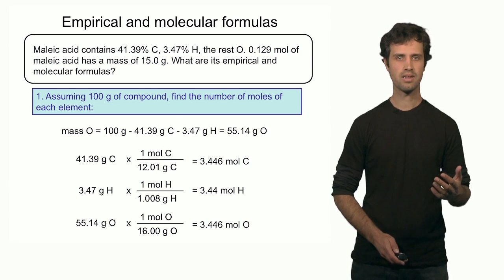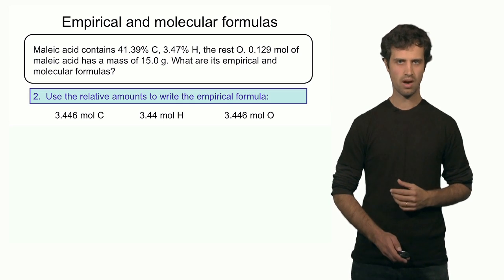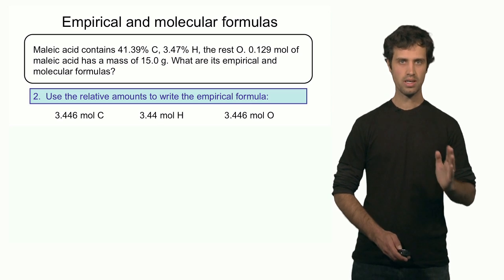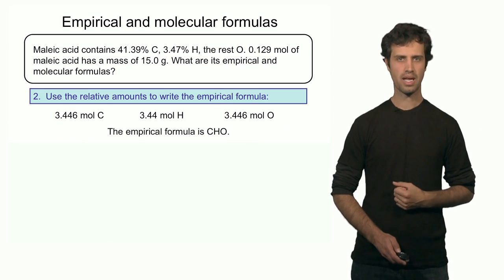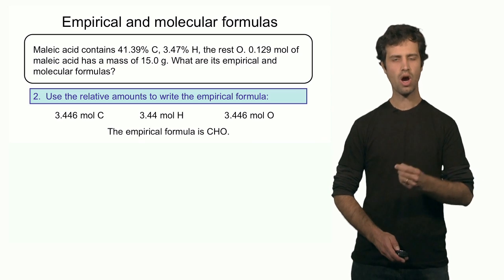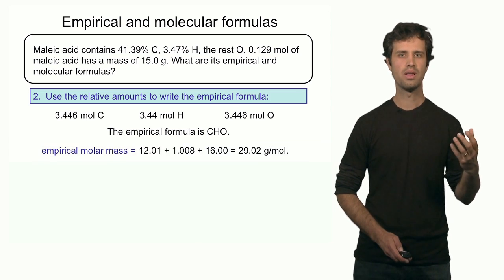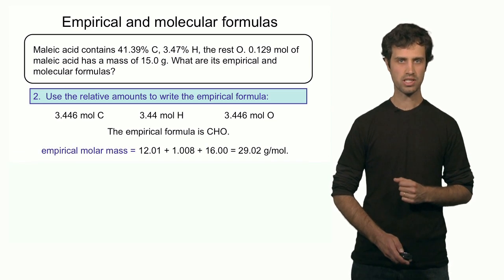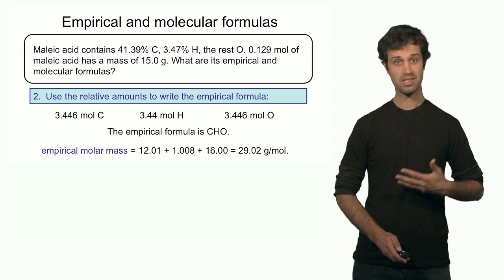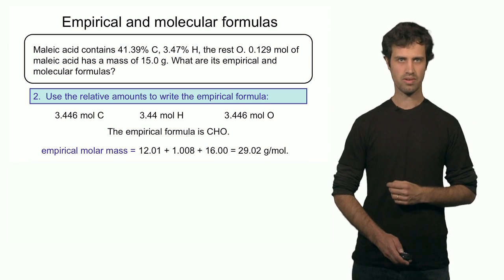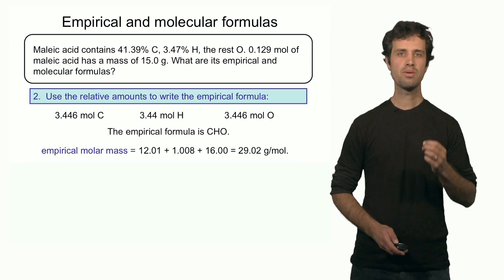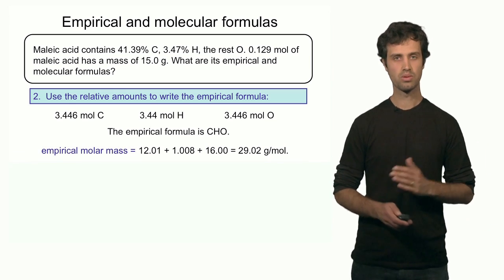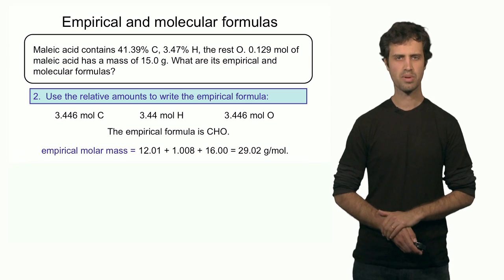So I find 3.44 moles of each of the elements, which means the ratio between them is 1 to 1 to 1, and thus the empirical formula is CHO. The molar mass of the empirical formula — adding up all the molar masses of the elements — is 29.02 grams per mole. So if the molecular formula were the empirical formula, the molar mass of the compound would be 29.02 grams per mole.